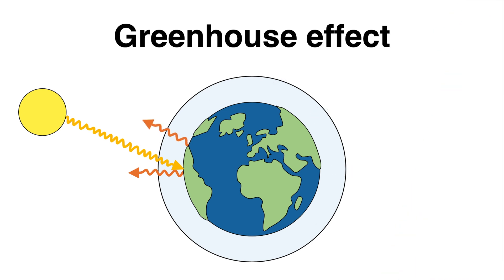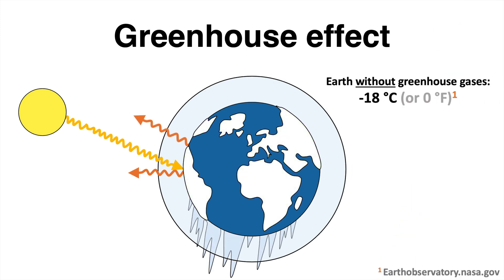Without those gases, our planet would be freezing cold with average temperatures of around minus 18 degrees Celsius and life as we know it would not be possible.